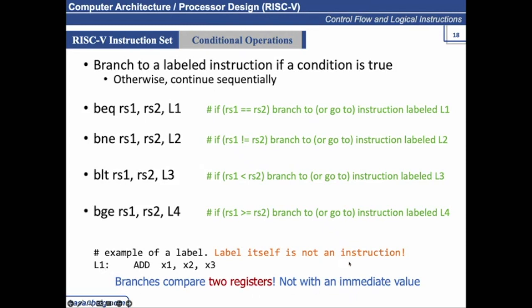Although we are not specifying the address of all the locations, it is computed by the compiler — it could be any address assigned by the compiler. As humans, we generally refer to it as a label. Also note that branch instructions compare two registers; you cannot compare a constant value with any register in a branch instruction.